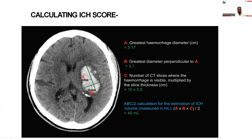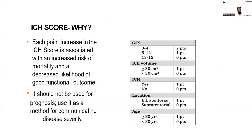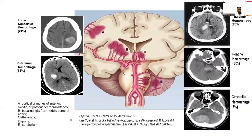How to calculate the ICH score: the greatest hemorrhage diameter is taken as A, B is the diameter perpendicular to A, and C is the number of CT slices where the hemorrhage is visible multiplied by the slice thickness. The formula ABC/2 is used for estimation of ICH volume. With each increase in ICH score, there is an associated increased risk of mortality and morbidity. The score should not be used for prognosis but as a method of communicating disease severity.